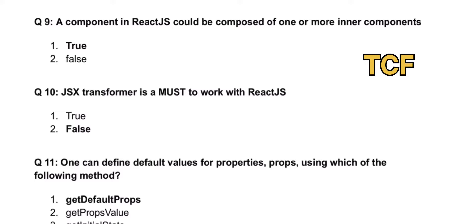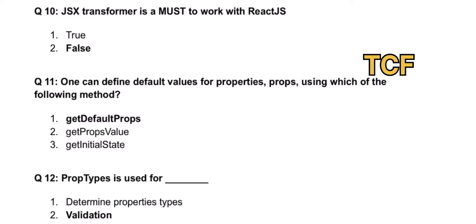JSX transformer is a must to work with React.js - that is false. JSX stands for JavaScript Extension, which uses HTML and JavaScript both as a combined code. One can define default values for properties (props) using which of the following method? That is getDefaultProps.